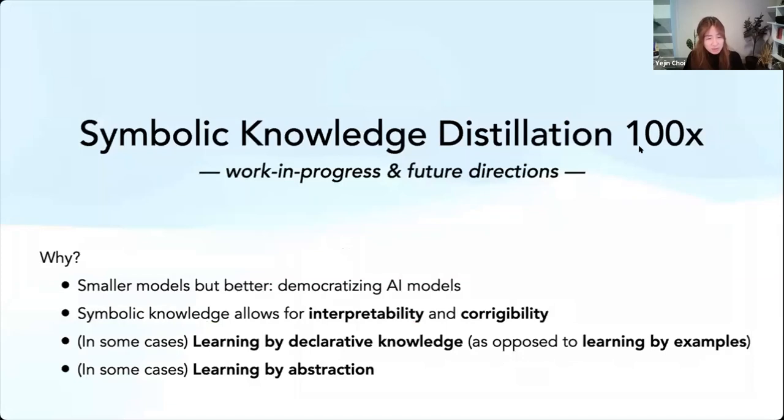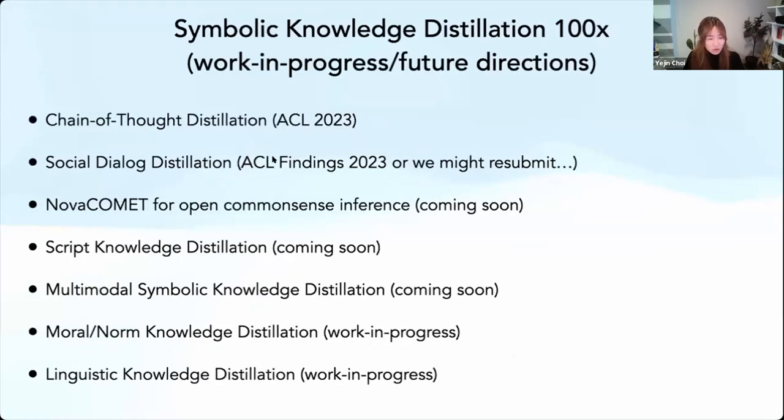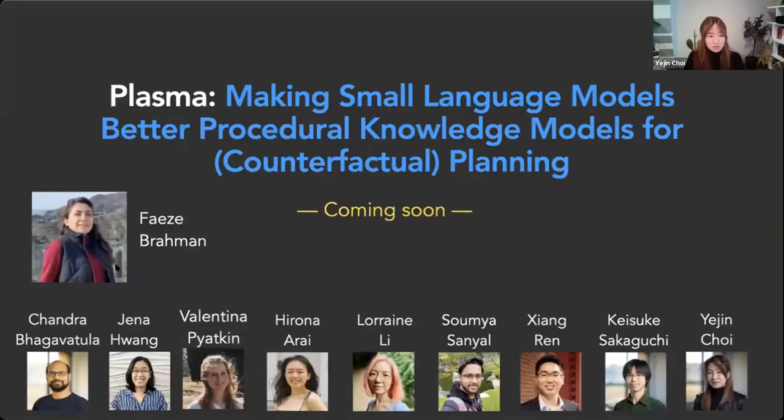So encouraged by this, we're doing this in many other cases as a work in progress as well. But in general, smaller models can democratize AI models, not only save the energy, but also it does help with interpretability and corrigibility because it allows you to inspect the quality of knowledge and then make a correction, which can then enhance the behavior of the downstream neural models. And so we have a lot going on, but maybe let me just very, very briefly highlight the script knowledge distillation, which might have some downstream use cases for physical systems.